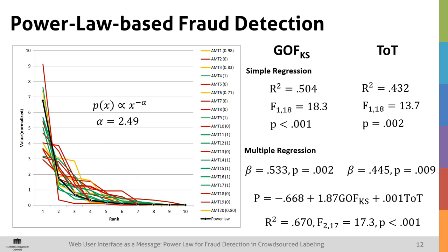Our regression analysis also shows that the goodness of fit explains the variance in precision better than the time on task metric. The same can be seen in the multiple regression at the bottom of the slide, where the goodness of fit factor has much more influence on the precision estimation than the time on task factor. You can also see that the combined metrics have a slightly better R-squared than the individual regressions.